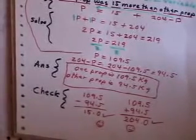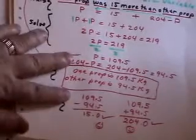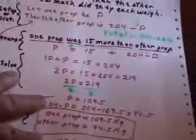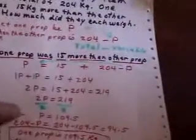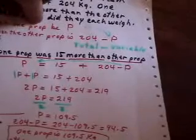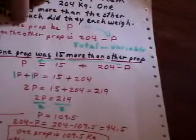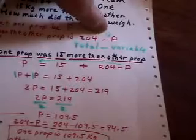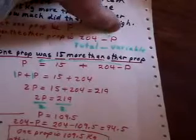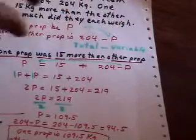So any time you see the word 'total,' here is the instant setup you can make: let one of the things be a letter, and the other thing is the total minus that letter — whatever letter you've used.